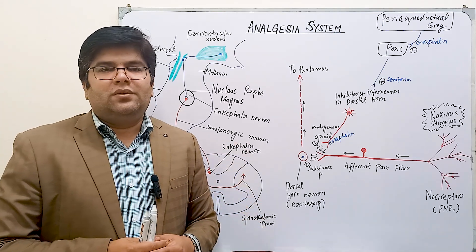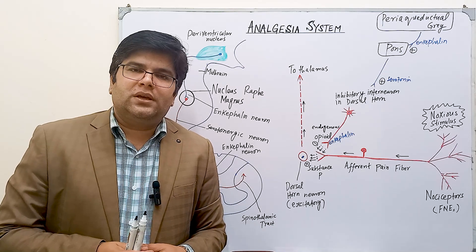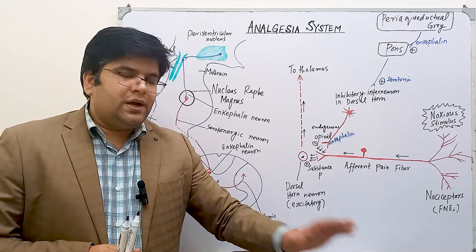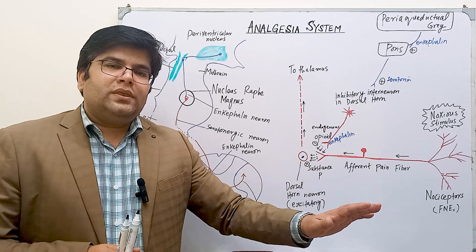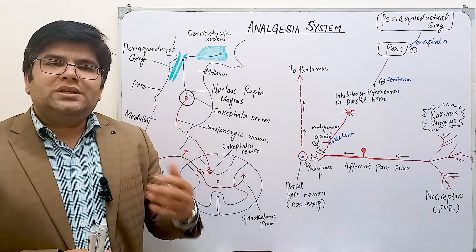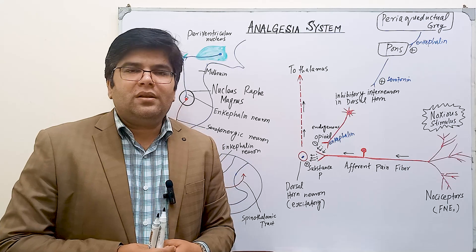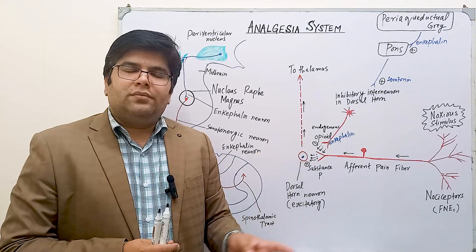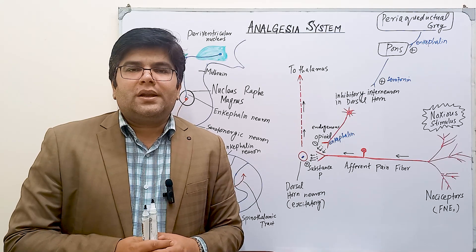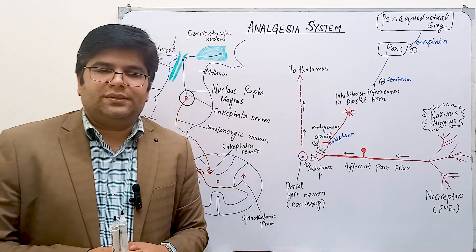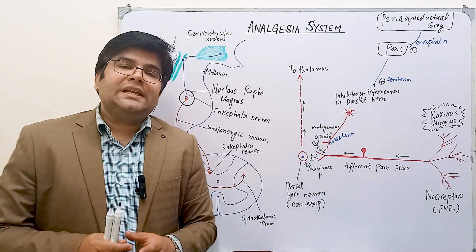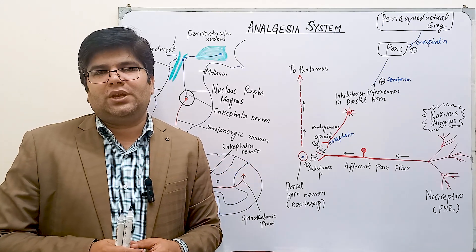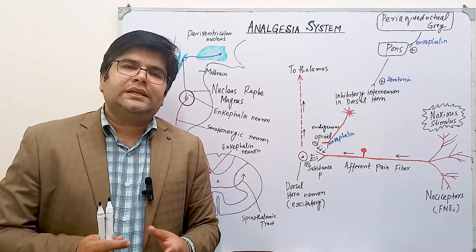This analgesia system can suppress all those local spinal cord reflexes which result from pain signals, for example the withdrawal reflex — if you have a pinprick or acute burn, you quickly withdraw your hand. These kinds of withdrawal reflexes will be suppressed by the analgesia system because these reflexes result from the pain signals.